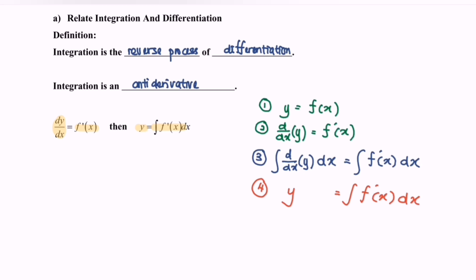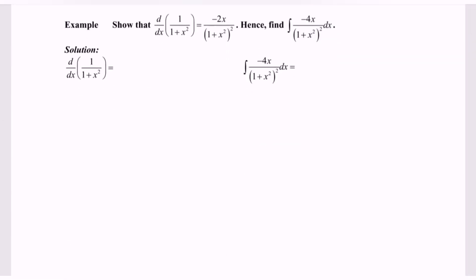So here we have the definition for the relationship between integration and differentiation. For example: show that when we differentiate the function 1 over (1 plus x squared) with respect to x, the result is negative 2x over (1 plus x squared) squared. Hence, find the integral of negative 4x over (1 plus x squared) squared with respect to x.